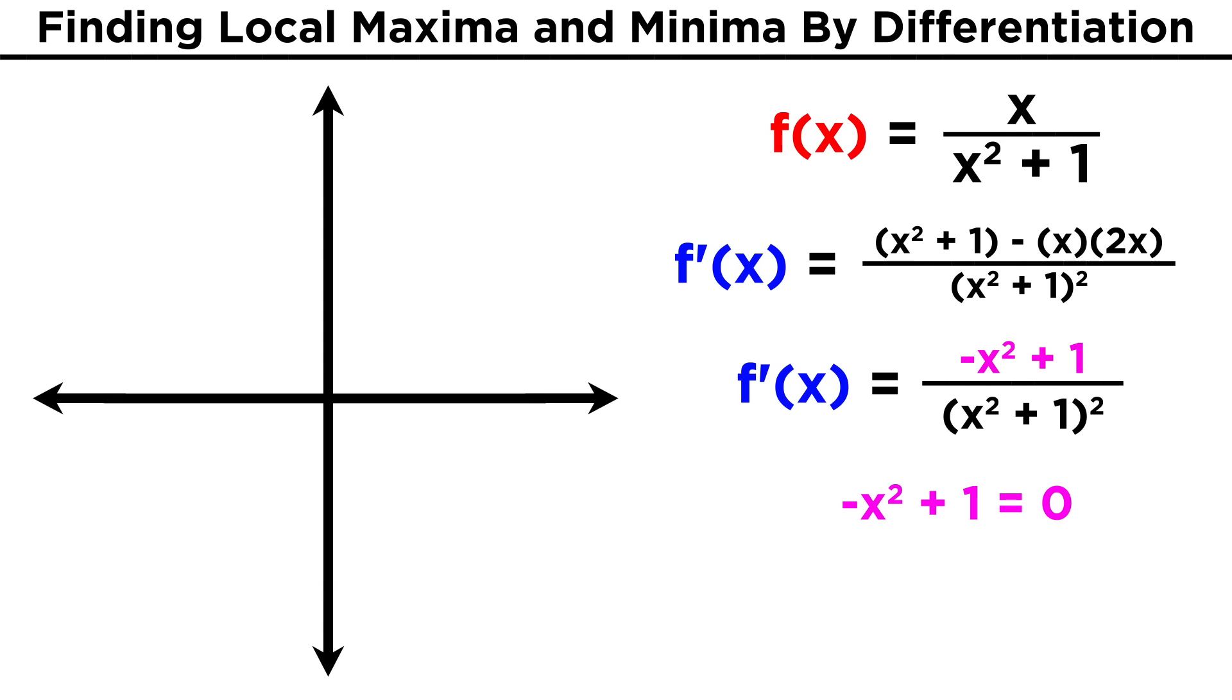Now remember, to find the zeros of a rational function like this one, we just need to find the zeros of the numerator, since zero over anything is zero. So let's set negative x squared plus one equal to zero. We rearrange to get x squared equals one, take the square root of both sides, and x must be equal to plus or minus one. That means that x equals negative one and one will give local maxima or minima on the function, and in fact, the function looks like this.